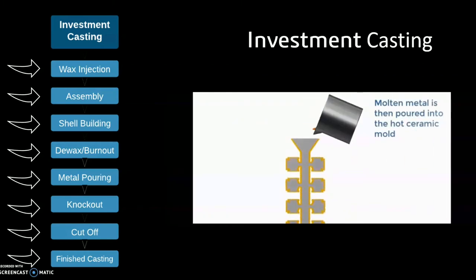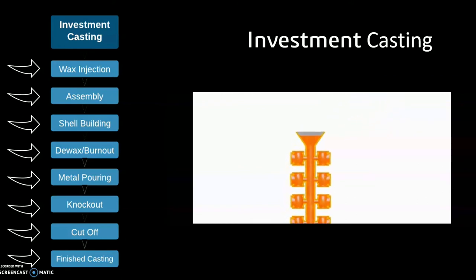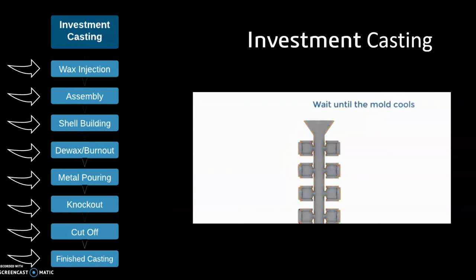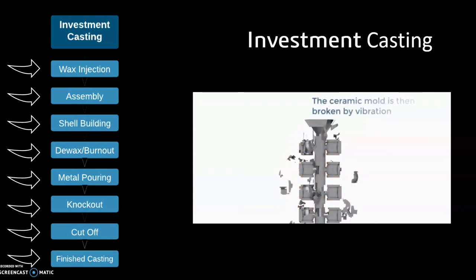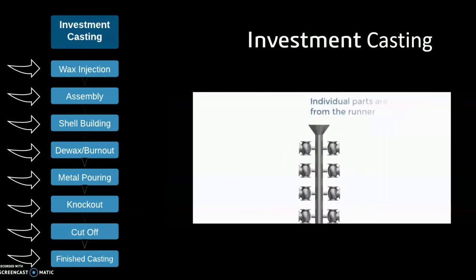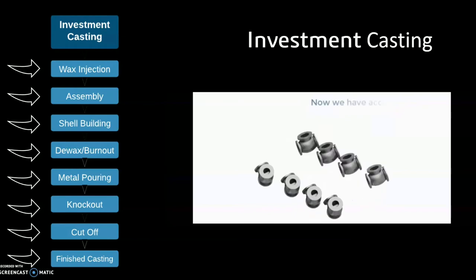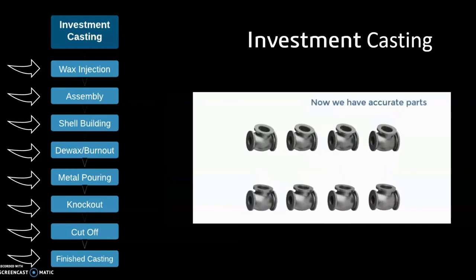The ceramic mould is heated to around 1000 degrees Celsius. Molten metal is then poured into the shell and left to cool. When the mould has cooled, it is vibrated until the outer shell is removed from the metal material castings, known as knockout. These are then cut from the tree, leaving individual castings.